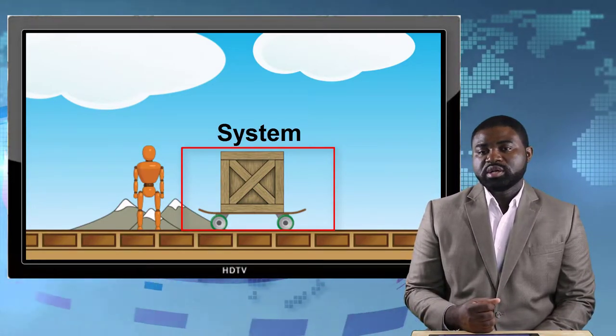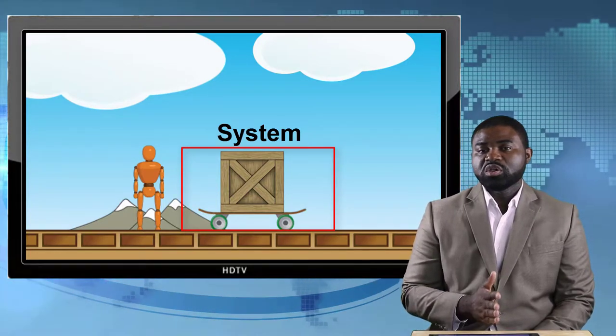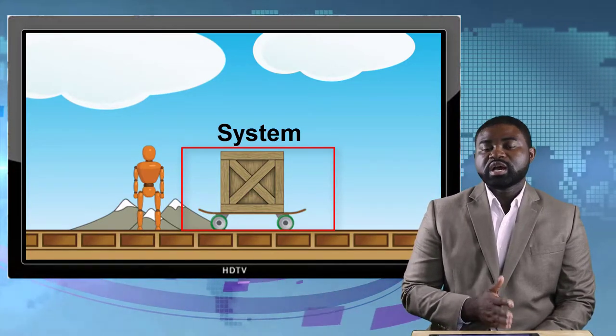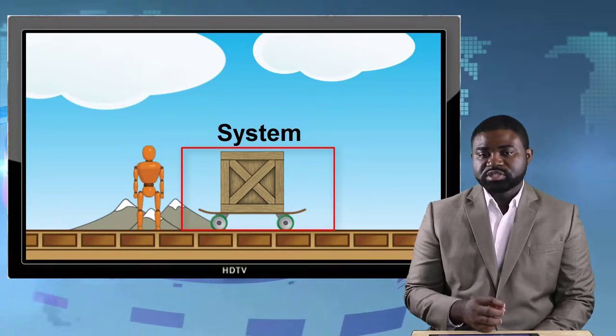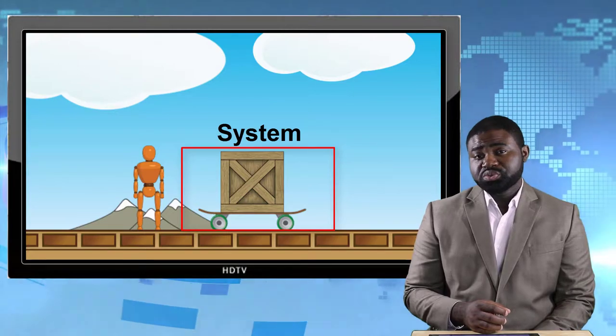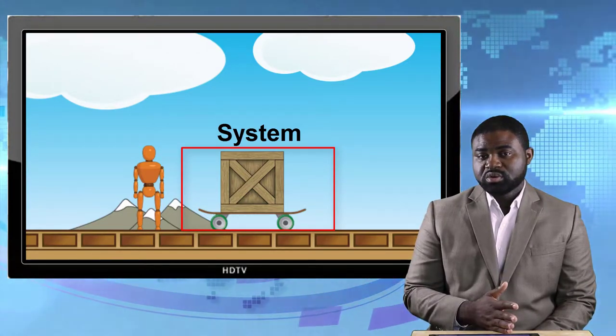On the one hand, once the system is specified, all other objects that are outside of the imaginary boundary of the system constitute what we call the environment or the surroundings.